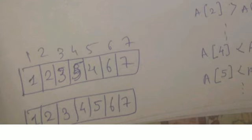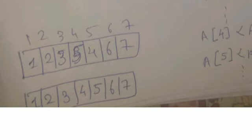So again apply the same technique. Check 7 and 6 — already sorted. Check 6 and 4 — already sorted. Check positions 4 and 5 — the numbers are 4 and 5. Then check 4 and 3, 3 and 2, 2 and 1 — all already sorted. In this way you get your entire array in sorted sequence: [1, 2, 3, 4, 5, 6, 7].